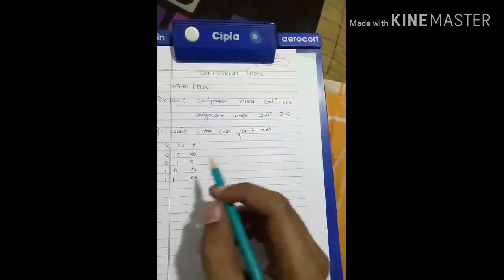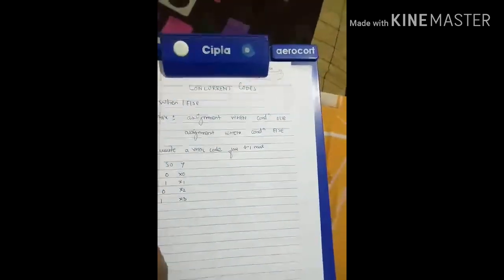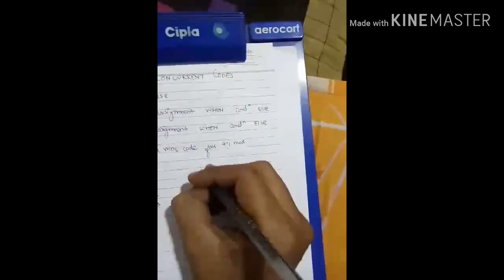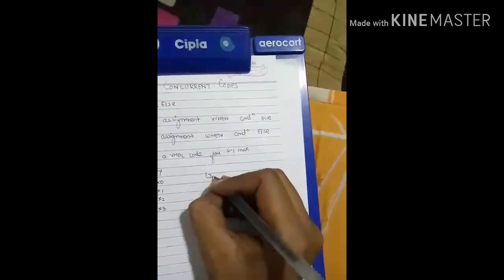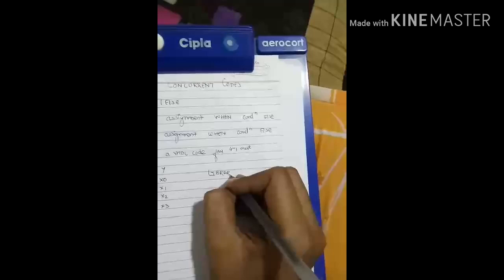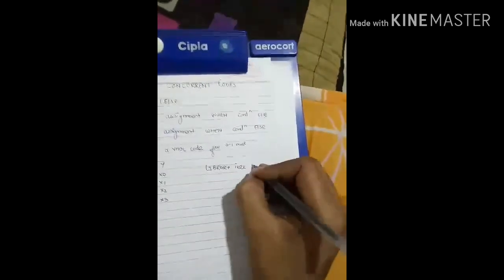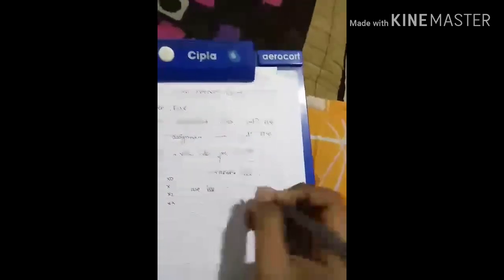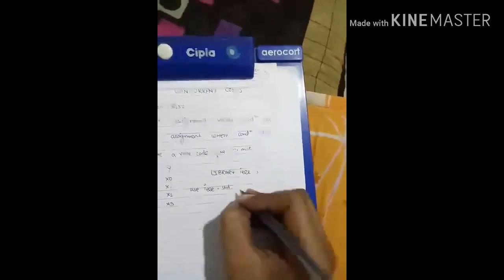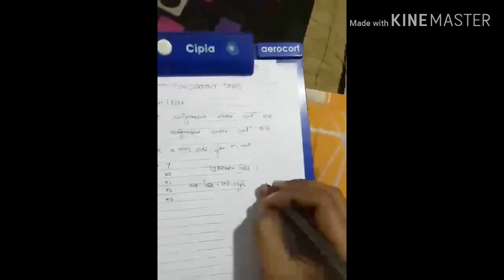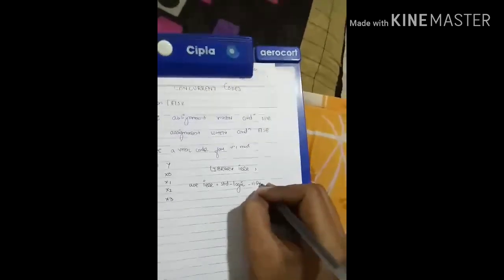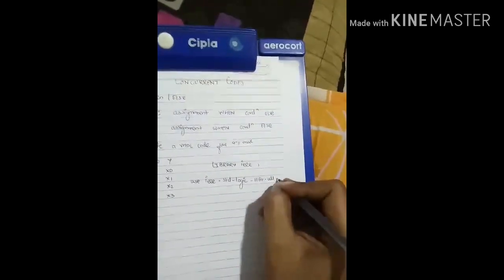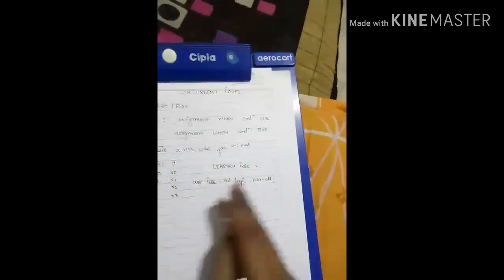First of all we need to declare a library. Library IEEE, use IEEE.std_logic_1164.all. Now we have declared a library. Now we have to declare an entity.